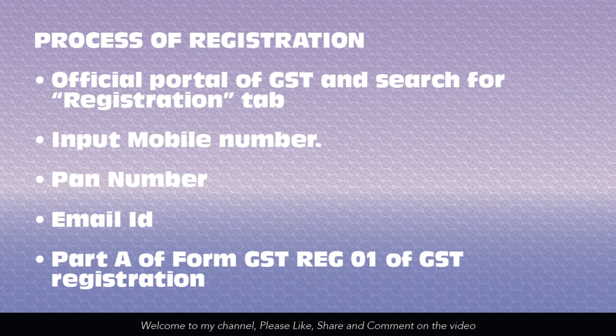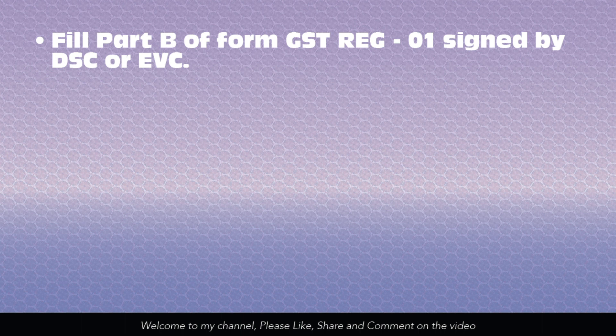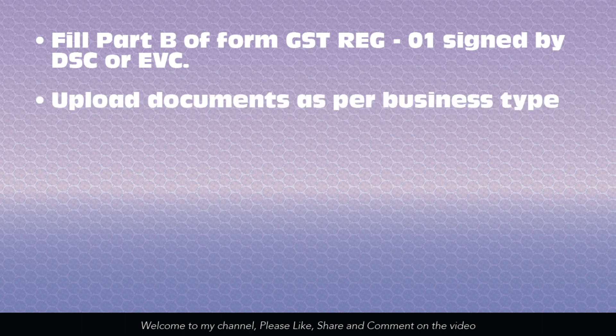Sixth, fill Part B of form GST REG-1, which is signed by DSC or EVC — it must be signed by the main authorized head. It is necessary that both Part A and Part B are filled. And lastly, you have to upload the documents as per the business type — whatever kind of business you are handling, those documents must be uploaded. That is the process of registration.